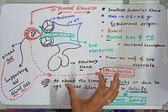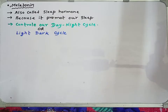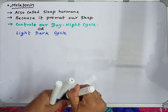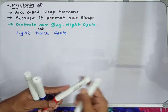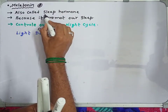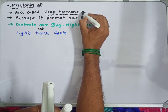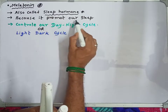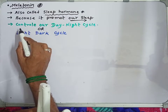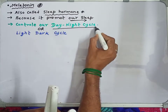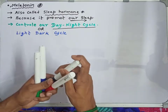Now let's discuss the real function of the pineal gland. Melatonin is the principal hormone released from the pineal gland. It is also called the sleep hormone because melatonin promotes our sleep and controls our day-night cycle and light-dark cycle.